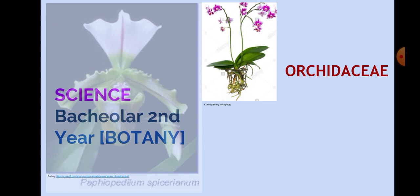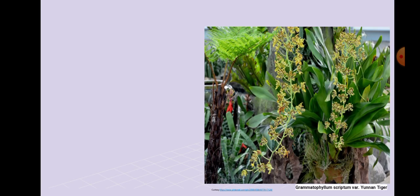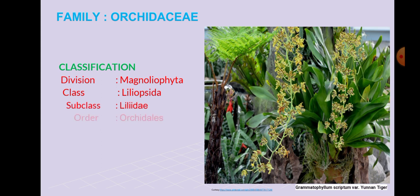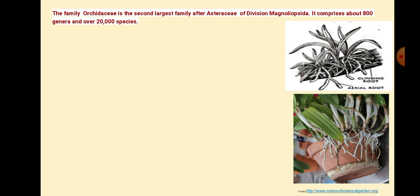Orchidaceae. Family Orchidaceae. Classification: Division Magnoliophyta, Class Liliopsida, Subclass Liliidae, Order Orchidales, Family Orchidaceae. The family Orchidaceae is the second largest family after Asteraceae of Division Magnoliophyta. It comprises about 800 genera and over 20,000 species.